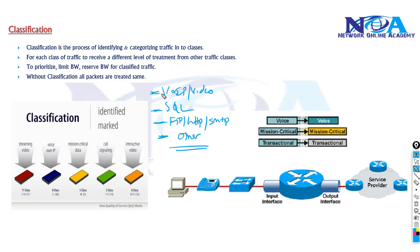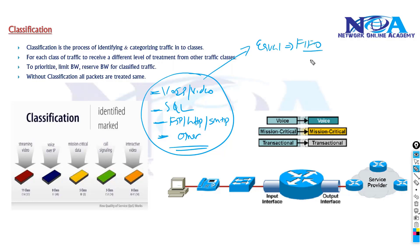By default, if you don't classify, all traffic is treated equally. By default there is no quality of service, and by default it uses first-in first-out — that is the default behavior. So the first step is to tell the router: hello router, this is my VIP traffic that I want to prioritize.